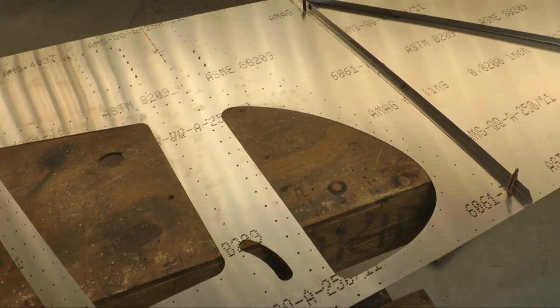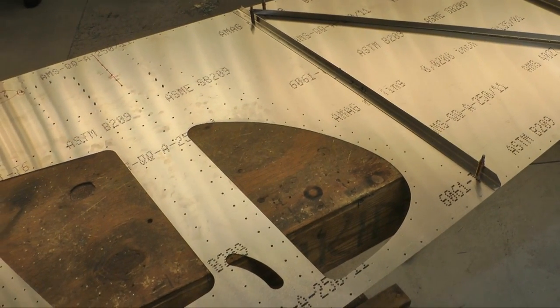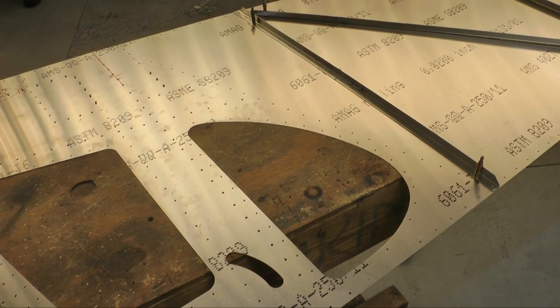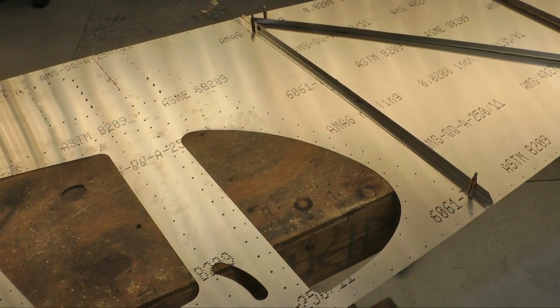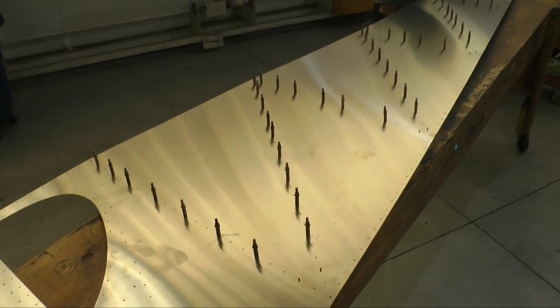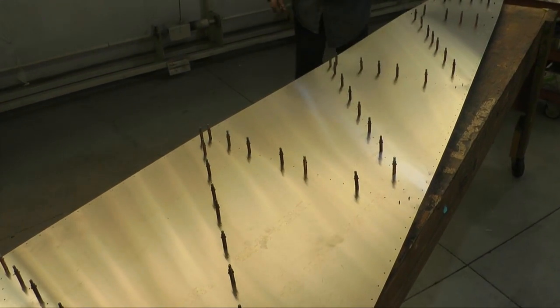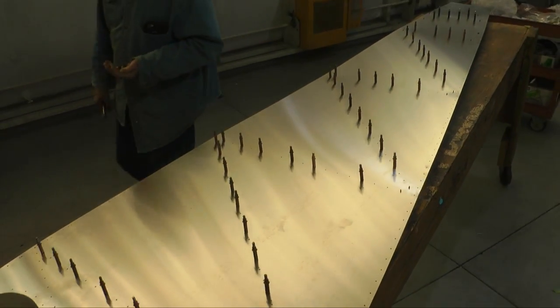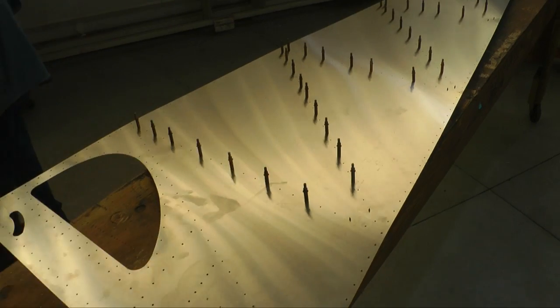We're riveting from the outside, so of course we're looking at the inside, and this is the left side skin. Now we're going to flip it over and remove the Clecos from the other side, so that we have a little bit more stable surface to rivet from.